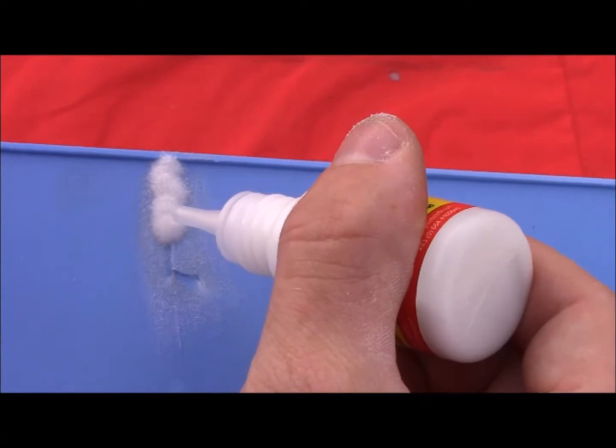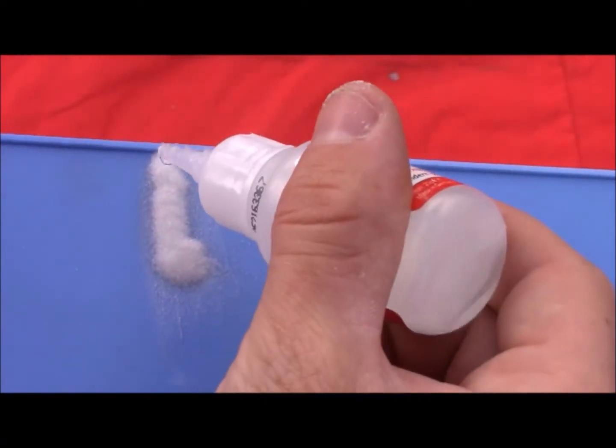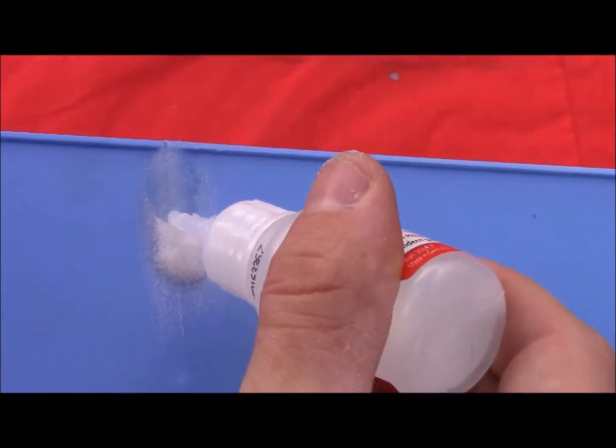Now apply the powder on the surface you prepared before. Afterwards use the liquid glue. That's it.